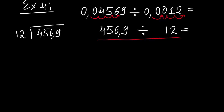Let's perform it: 456.9 divided by 12. How many 12s we have inside 45? Actually 3. We write 3. 3 times 12 is 36, so this is minus 36. 45 minus 36 is 9. We write here 6. How many 12s we have inside 96? Exactly 8. We write 8. Since our integer part of the number is finished, we put the decimal point here. And 8 times 12 is 96, so we have 0.